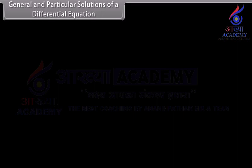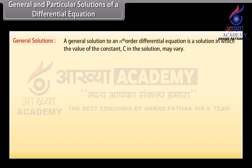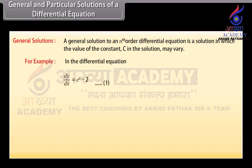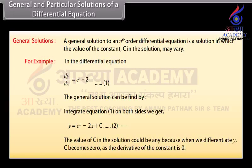General and particular solutions of a differential equation. A general solution to an nth order differential equation is a solution in which the value of the constant c may vary. For example, given d²y/dx = e^x − 2, integrating both sides gives the general solution: y = e^x − 2x + c. The value of c could be any value, since the derivative of a constant is zero.